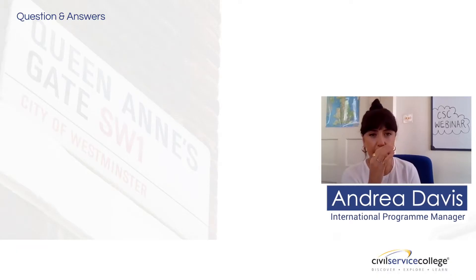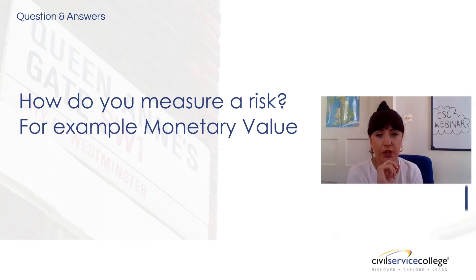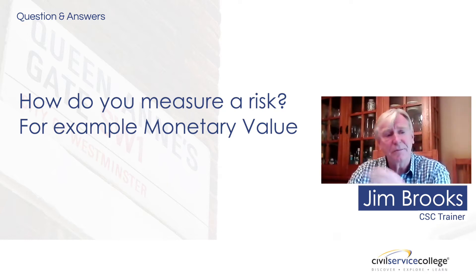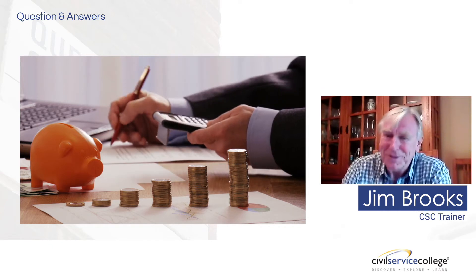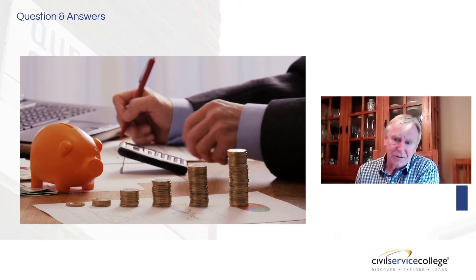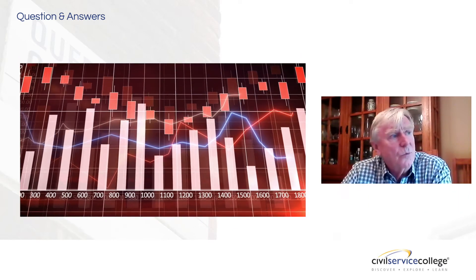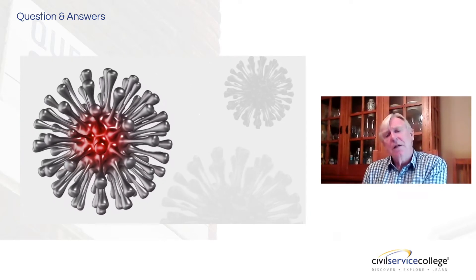Just quickly, on the back of that — Debra had asked how do you measure a risk, for example monetary value. Some risks are quite easy because you know that if you invest a million pounds and you lose it, you've lost a million — that's really straightforward. But quite often there is collateral damage when something goes wrong, and ones that aren't immediately seen.